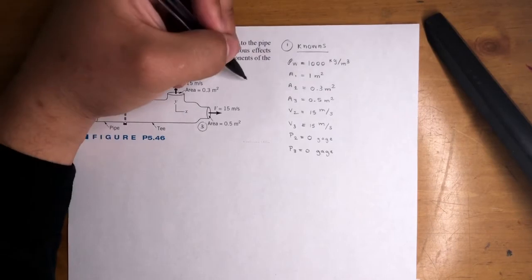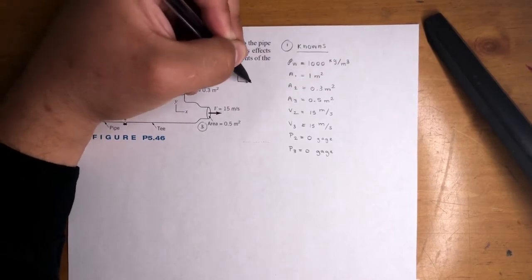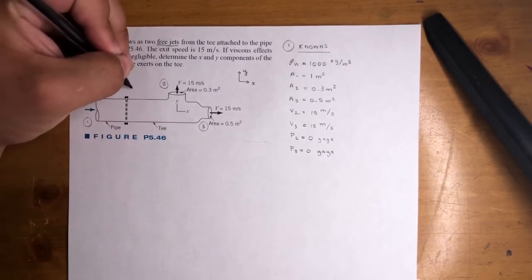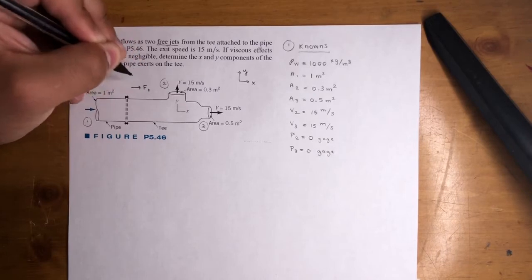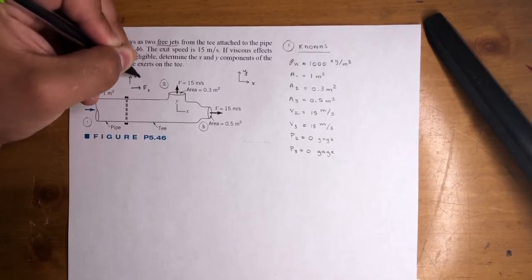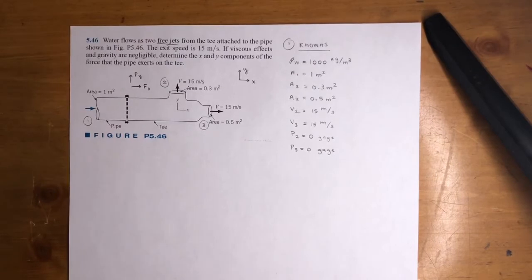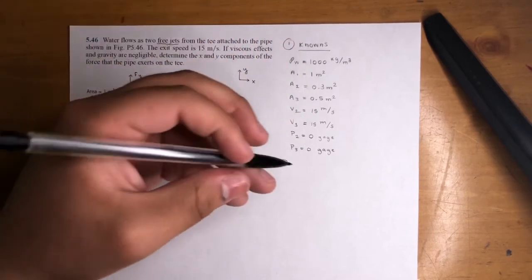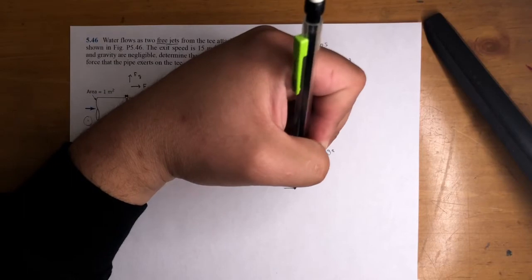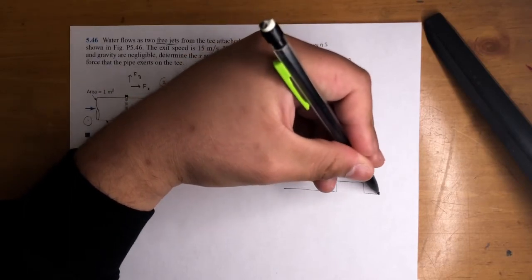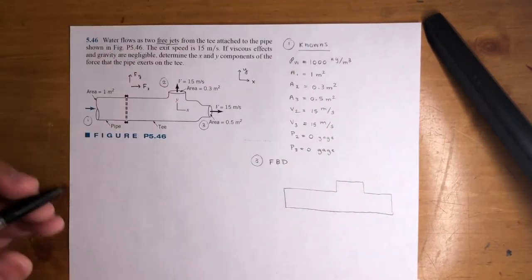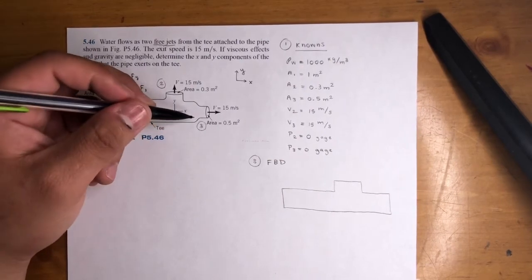This is our coordinate system, X and Y. We've got to find another anchoring force problem, the X and Y components. There's a force acting, let's assume this way in the X direction and positive in the Y direction on the T. Let's go ahead and draw the free body diagram to see what we'll need to solve the problem. This is what the system looks like, kind of like that.